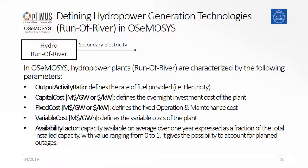The availability factor has been described before in this module. It is used to indicate the share of time on a scale from zero to one in which the technology is available for production. This is to consider planned plant outages, for example for maintenance.